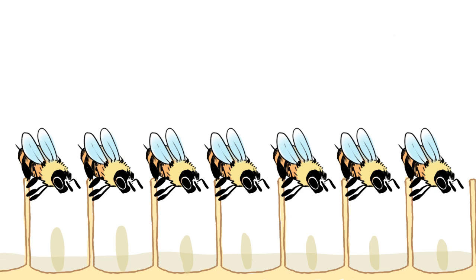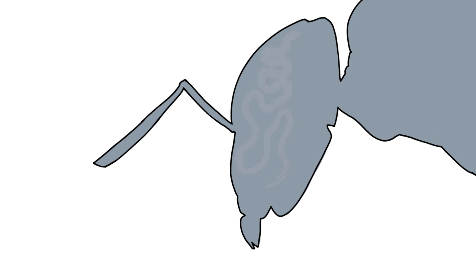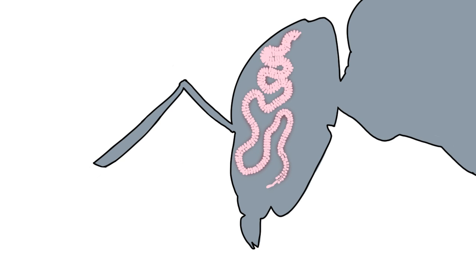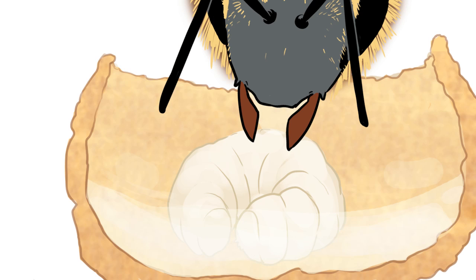Each worker bee has glands in their head which can produce two kinds of creamy white food, or jelly. Worker jelly will turn a diploid egg larvae into a worker bee, while the thicker and denser queen jelly — which is rich in sugar — would turn that same larvae into a queen bee.